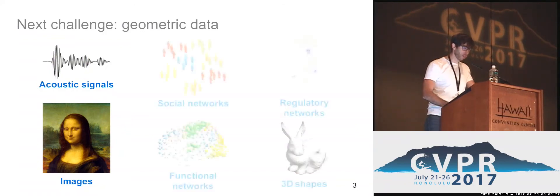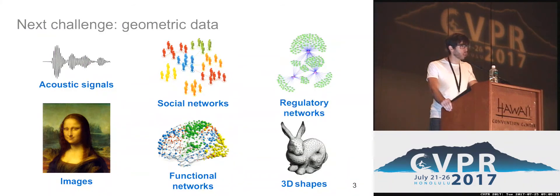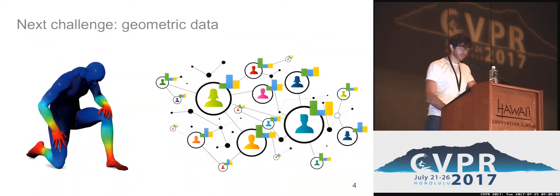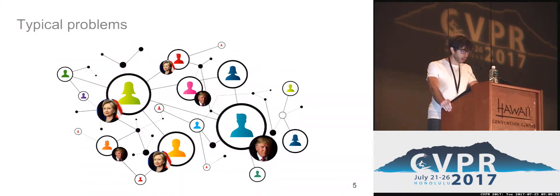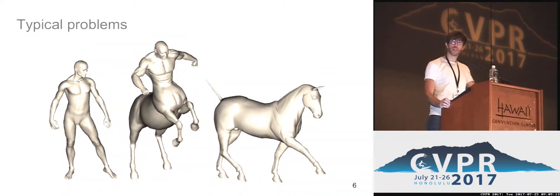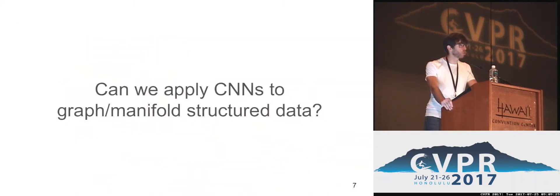However, the success of deep learning techniques, and in particular of convolutional neural networks, has mainly come so far from signals defined on Euclidean domains, namely on grids. In a multitude of different fields, one may have to deal with social networks, regulatory networks, or 3D shapes — data that can be represented not according to Euclidean domains, but rather to graphs and manifolds, and in particular to signals defined on these domains. Typical problems include vertex classification, such as predicting voting behavior in a social network, or graph classification, such as identifying which shape a set of manifolds represents.